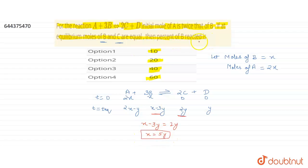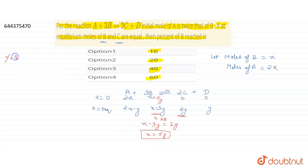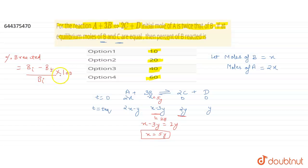Now we need to find the percent of B reacted. Since X = 5Y, the initial moles of B are 5Y. At equilibrium, moles of B are 2Y. The formula for percent of B reacted is: (initial moles of B − final moles of B) ÷ initial moles of B × 100.